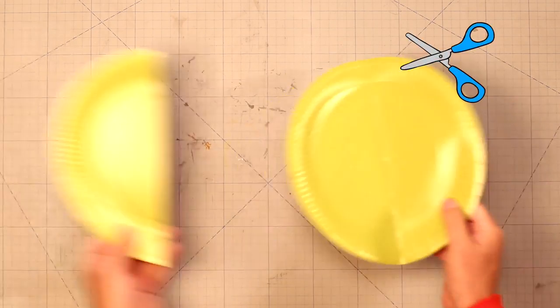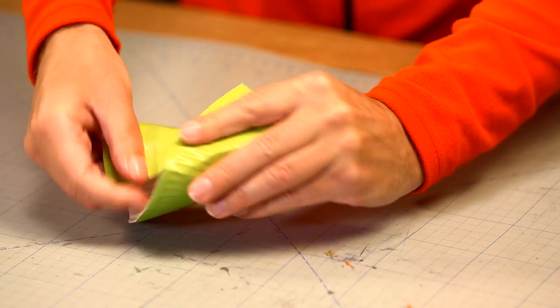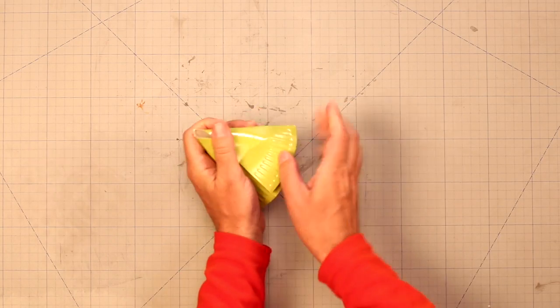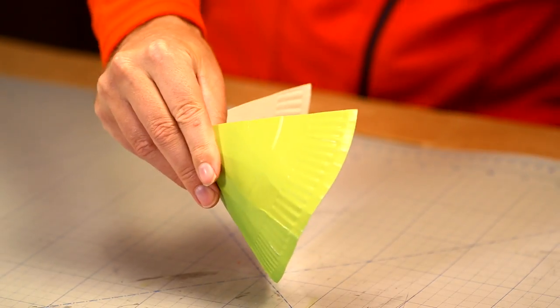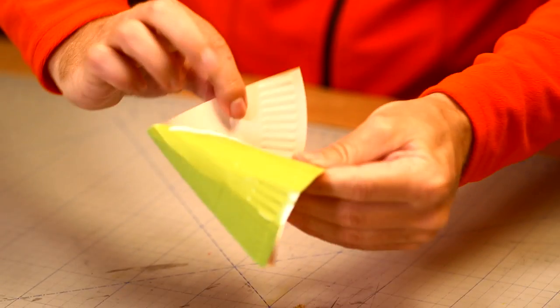And cut it in two halves, so one paper plate can become two party hats. A bit of glue on one side, and we can stick it together.